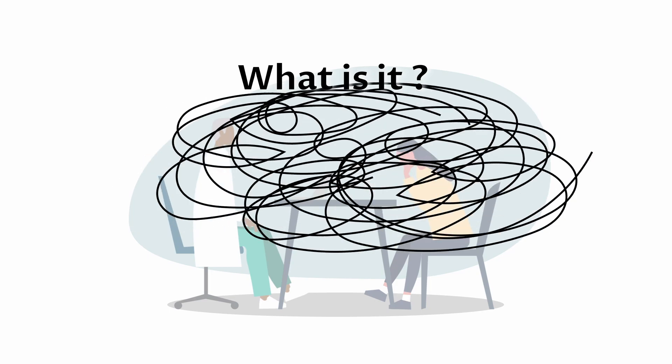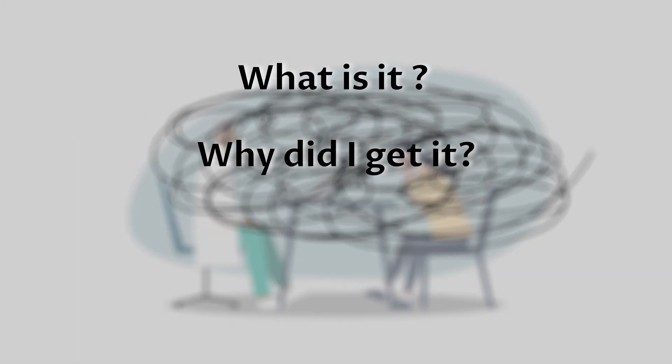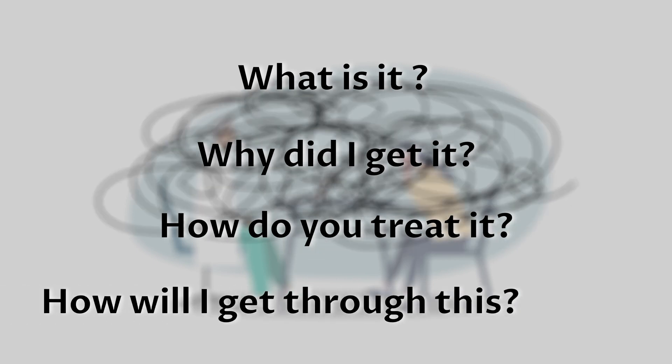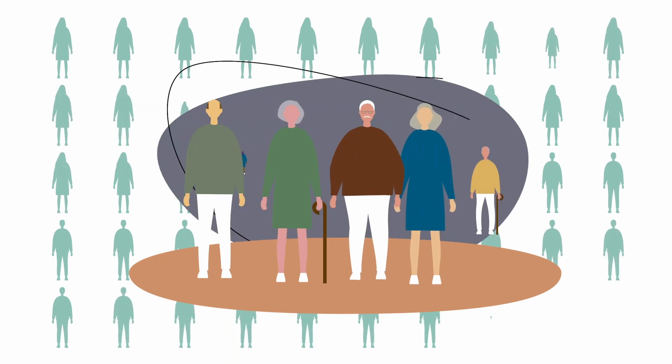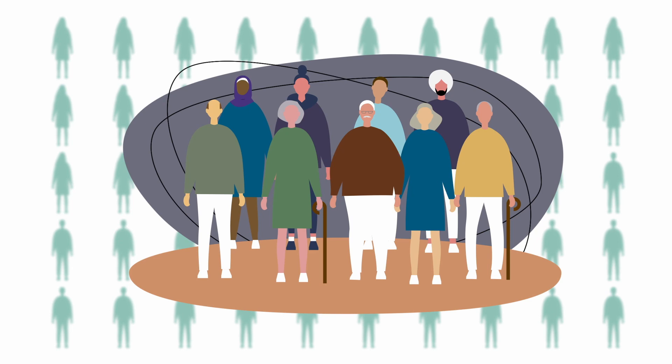What is DLBCL? Why did I get it? How do you treat it? How will I get through this? Diffuse large B-cell lymphoma, or DLBCL, can happen at any age but most often appears in middle age or older people.